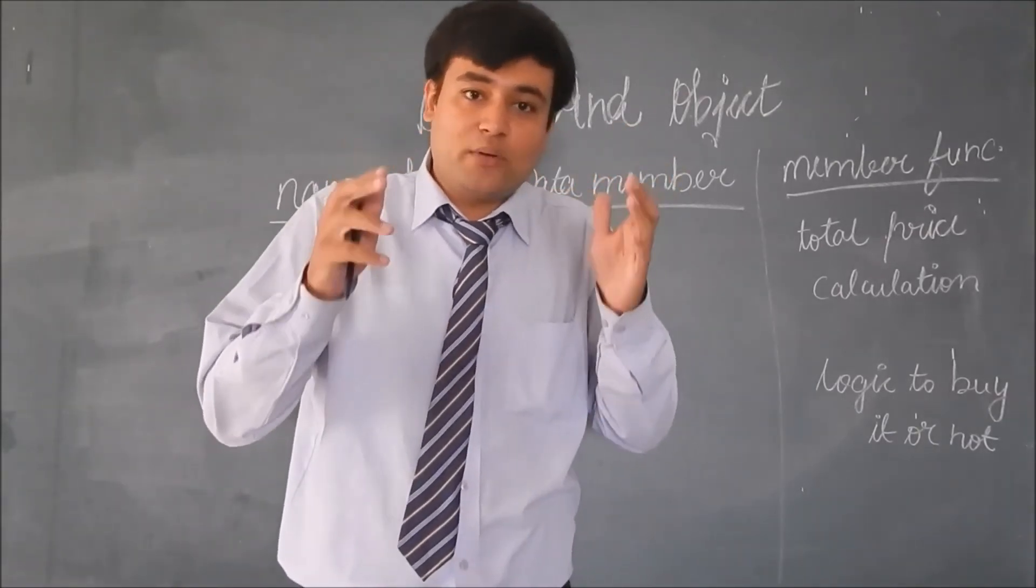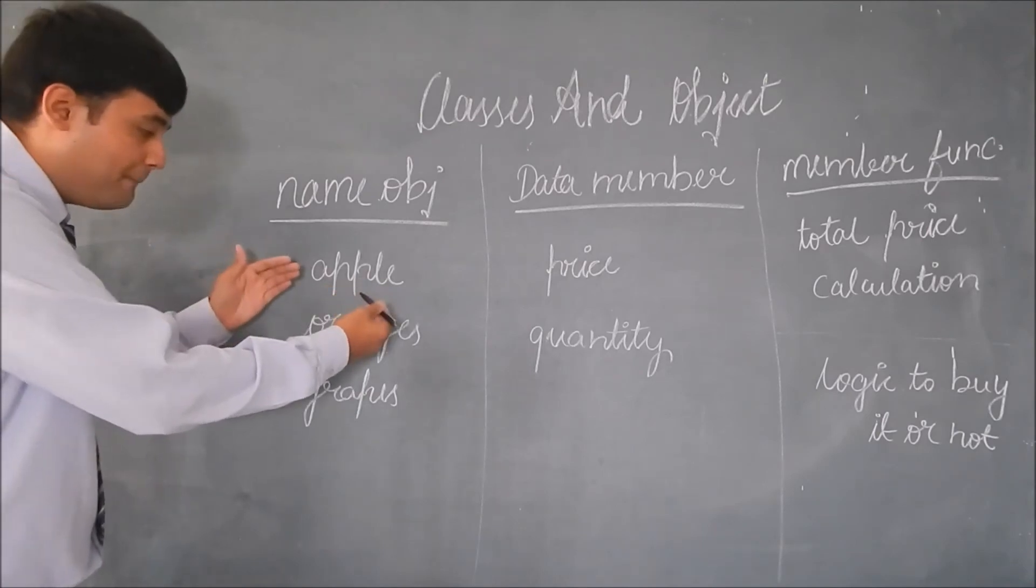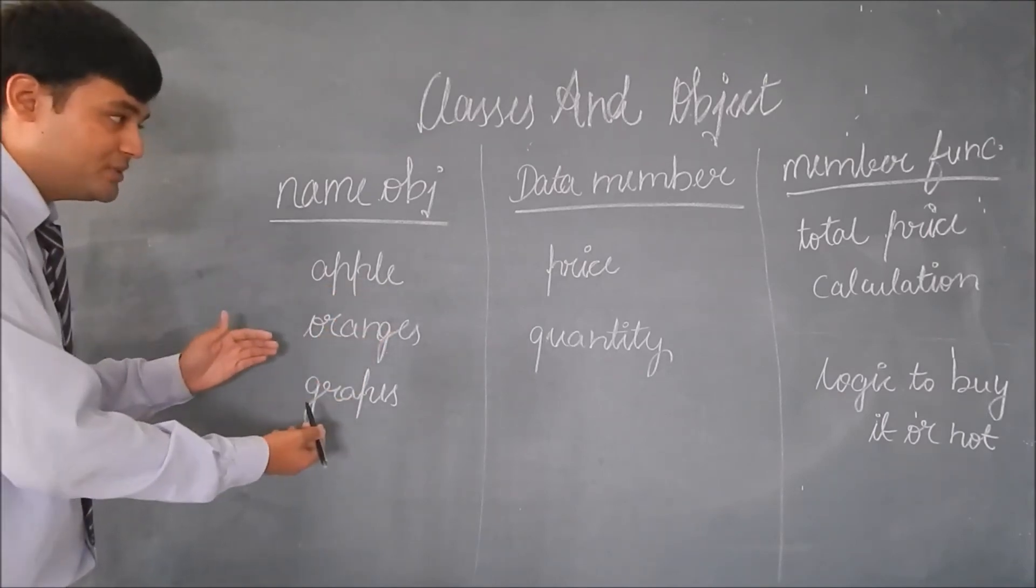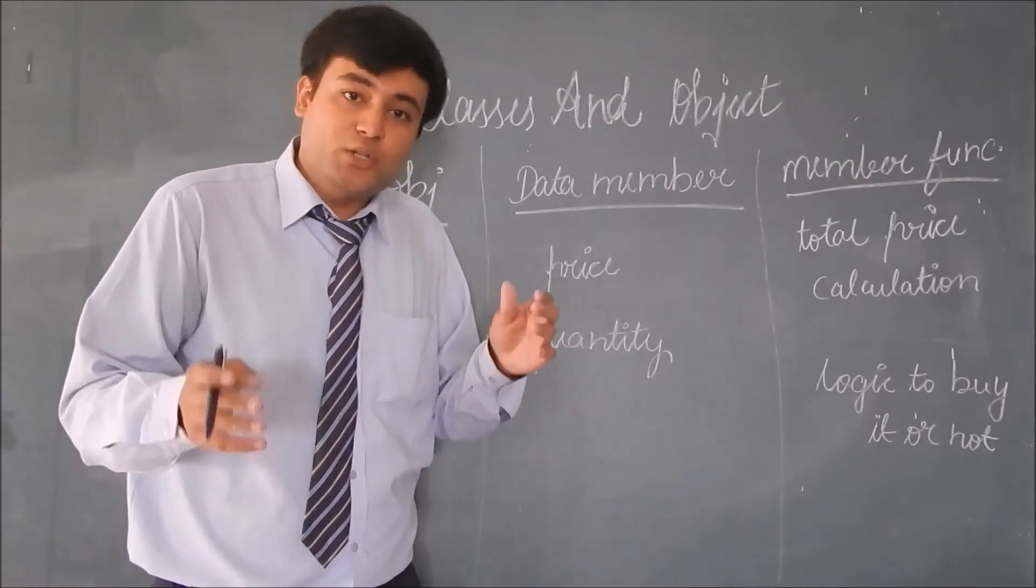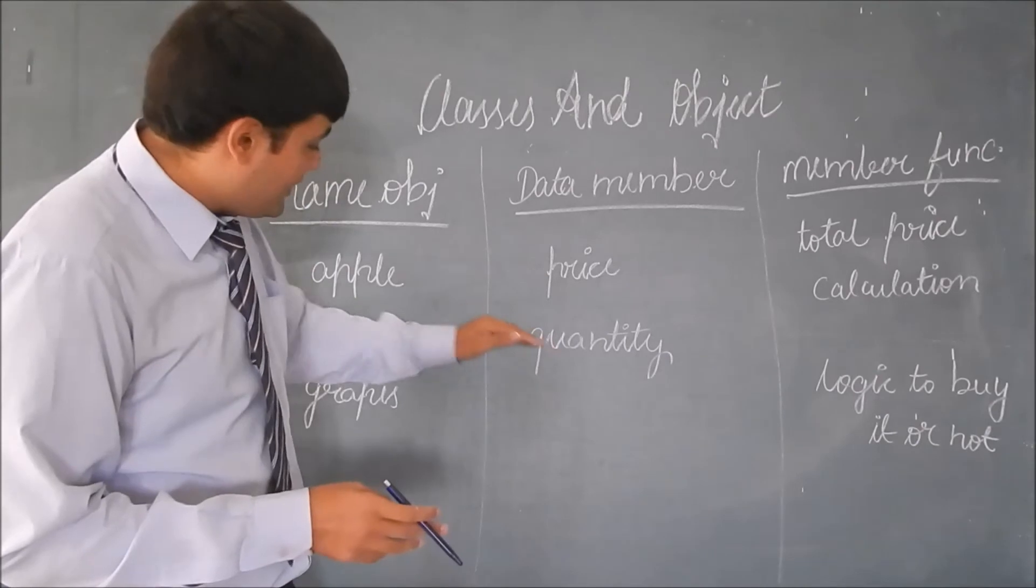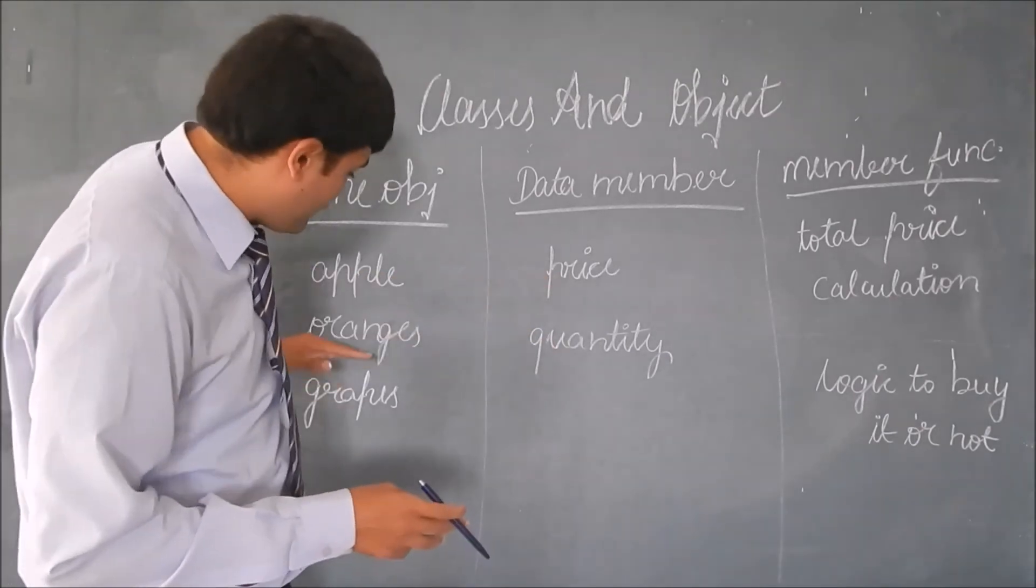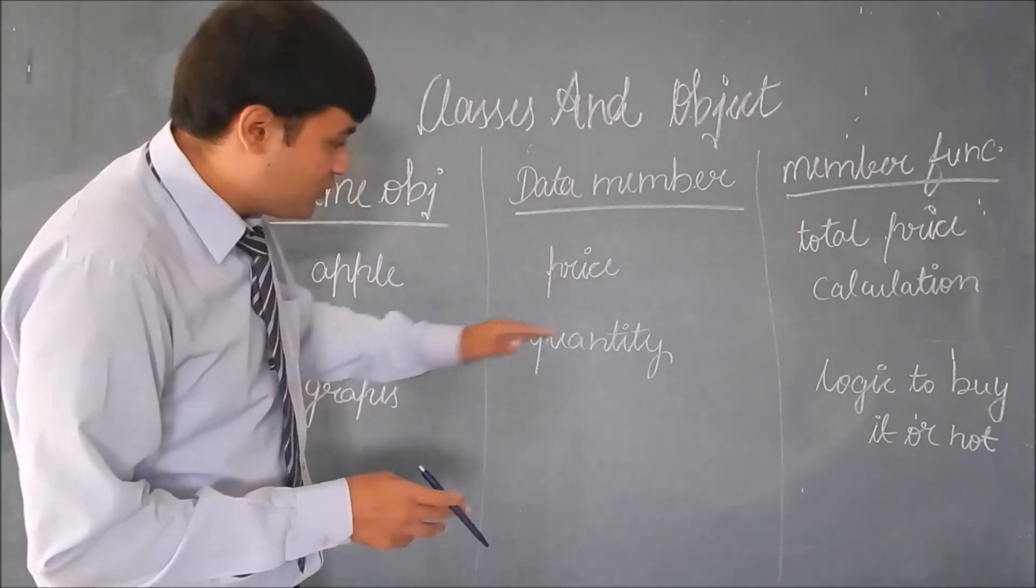Let's understand how it will work. In the program, you will define three objects: apple, oranges and grapes. According to the prices given by the shopkeeper, you will now arrange the data like prices of apple, quantity of apple, prices of oranges, quantity of oranges, price of grapes, quantity of grapes.